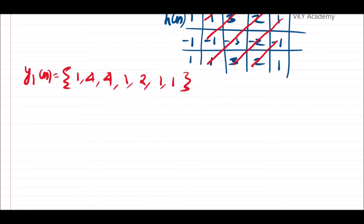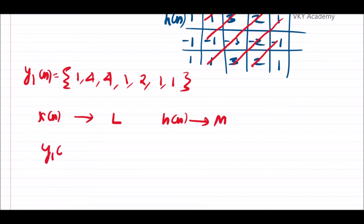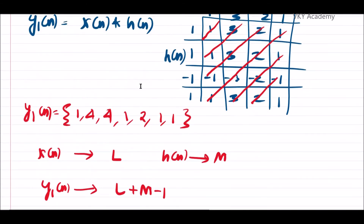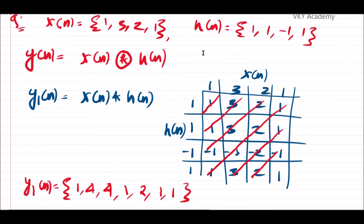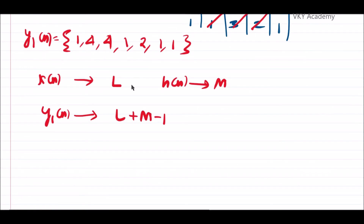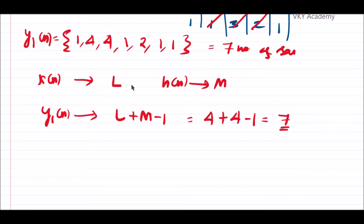According to the rule of linear convolution, if the length of x[n] is L and the length of h[n] is M, then the length of the linearly convoluted result y1[n] will be L + M - 1. Here x[n] has 4 samples and h[n] has 4 samples, so 4 + 4 - 1 = 7 samples are in y1[n].